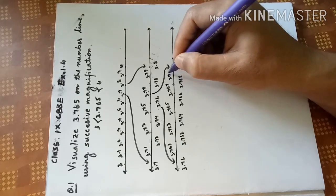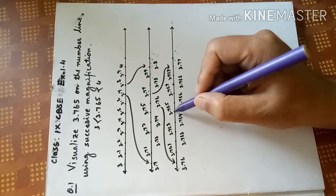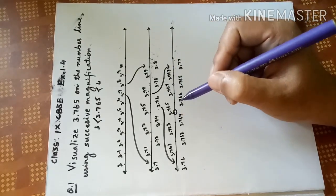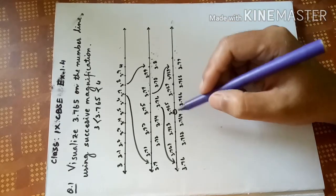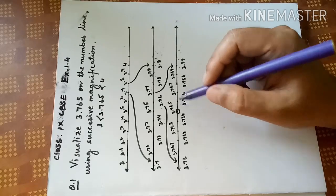So where is our answer? Our answer is here, 3.765. So this point represents 3.765 on the number line.